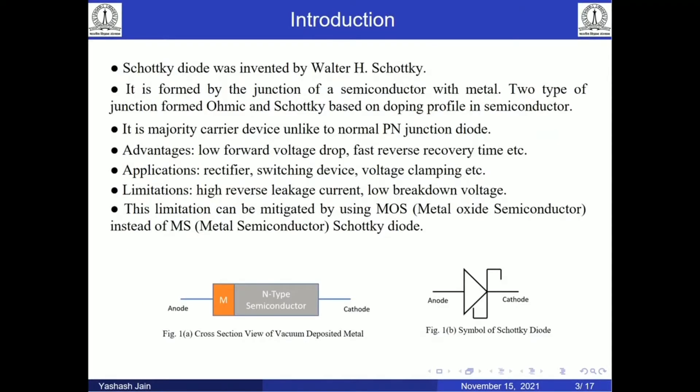Schottky diode was invented by German scientist Walter H. Schottky. It is a metal-to-semiconductor junction. Basically it has two types of junction — Schottky and ohmic junction — based on the doping profile of the semiconductor. It is a majority carrier device, unlike the normal PN junction diode. It has some advantages like low forward voltage drop, fast reverse recovery time, and applications like rectifier, switching device, and voltage clamping. It has some limitations like high reverse leakage current and low breakdown voltage.